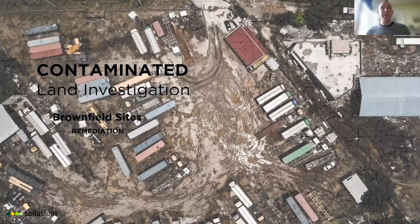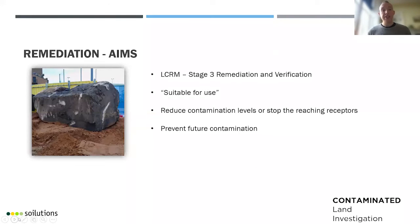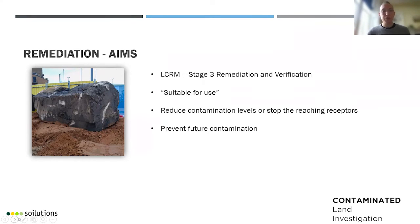Once that Phase 3 is complete, specialist contractors can set about remediating the site. The remediation work is classed as Stage 3 under LCRM, and the main aim is to leave the site suitable for use in accordance with brownfield policy. This means the aims will vary depending on what the development is, who will be using the site, and what environmental receptors are around it — a housing development will need lower contamination levels because of kids playing in back gardens and people growing vegetables, compared to an industrial estate. The ultimate aim is always to reduce contamination or stop it reaching a receptor. This picture shows a fuel tank that had been removed — there's no point treating contamination in soil without removing the source, as it would just recontaminate the cleaned-up ground.